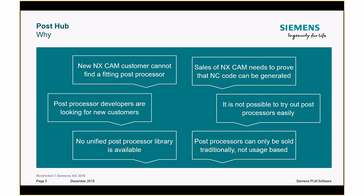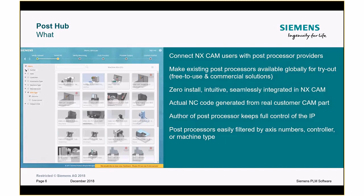PostHub, as the name implies, is a post-processing library which enables you to try post-processors out - to see if a post-processor does what you want, if it's a good starting point - and then connect parties: those looking for post-processors with those who have good post-processors to offer. What makes PostHub unique compared to previous attempts is the ability to actually try out a post-processor with your own part file.